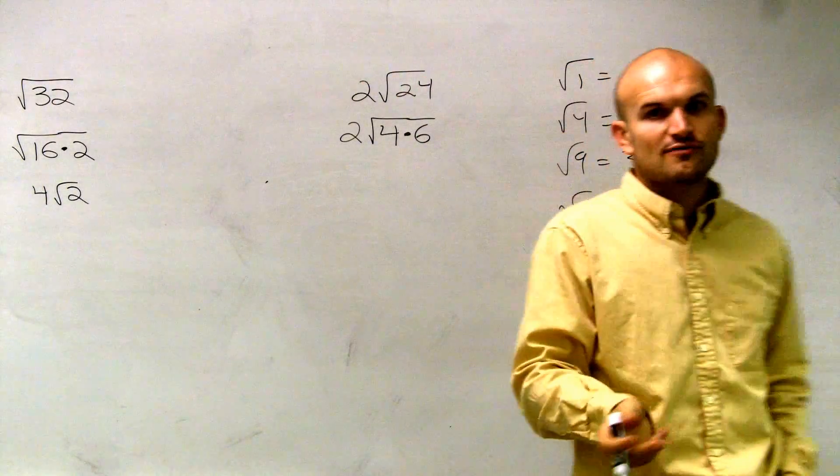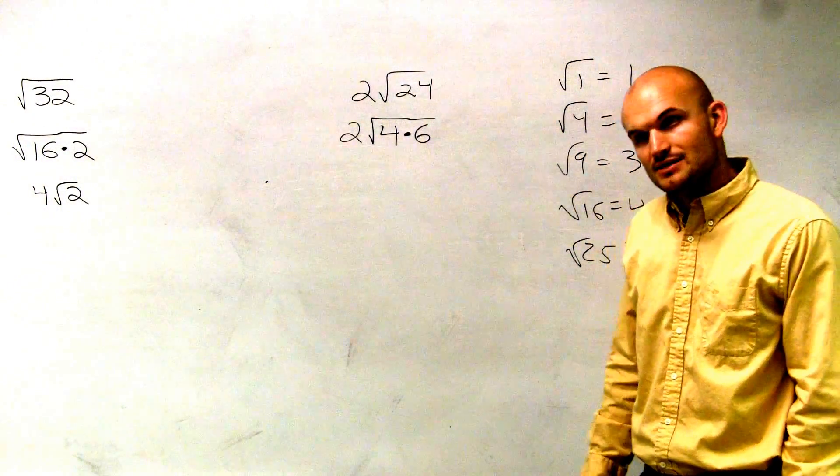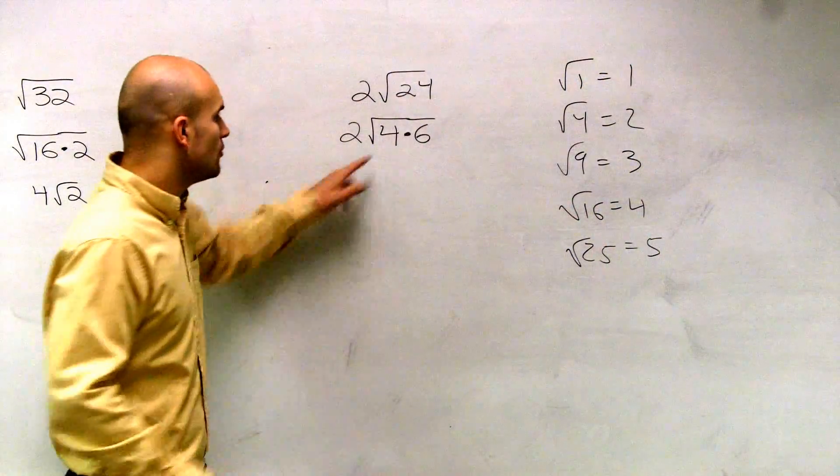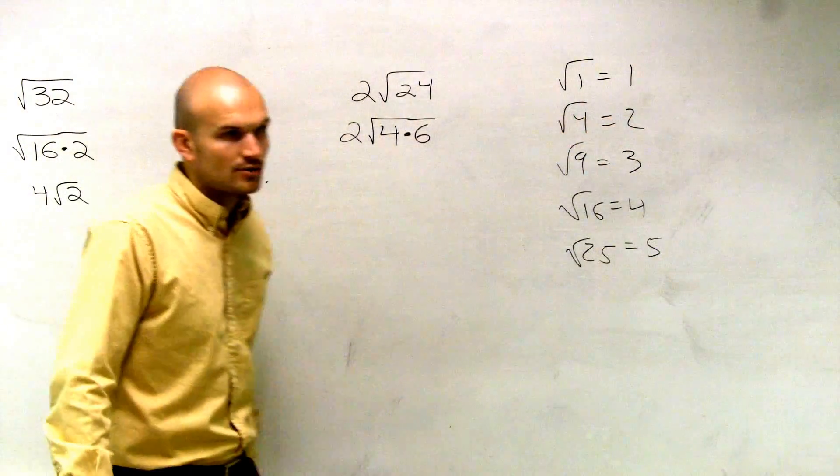Is 4 times 6 equal to 24? Are those mathematically exactly the same? Yes. Well, now what's so helpful about this is now I know what the square root of 4 is, right? The square root of 4 is 2.